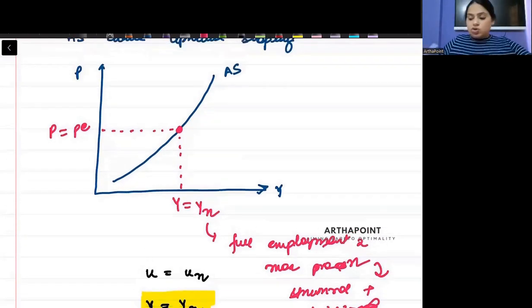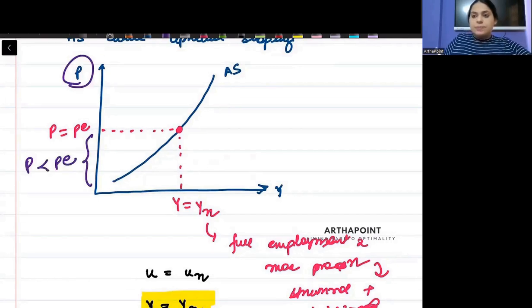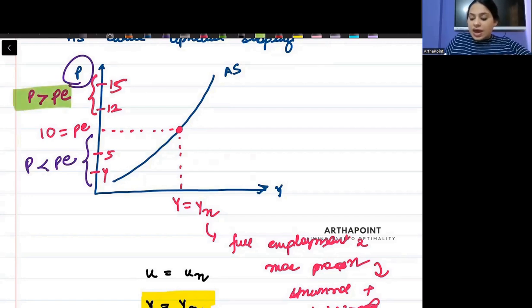But this may not be true also. It is possible that my price, actual price, is less than the expected price. Suppose I expected the price to be 10. So actual price can be 5 also. It can be 4 also. And actual price can be 12 also. It can be 15 also.